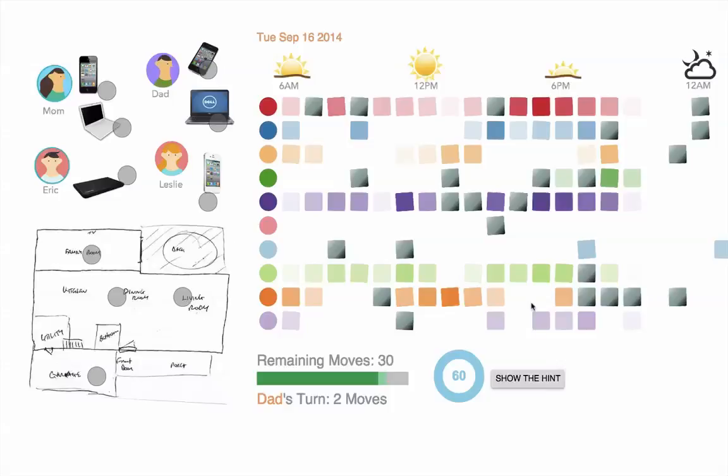Each row of those squares color-codes the activity levels of a device or a room. But you don't know which source it is. It could be any of the devices or rooms on the left-hand side.